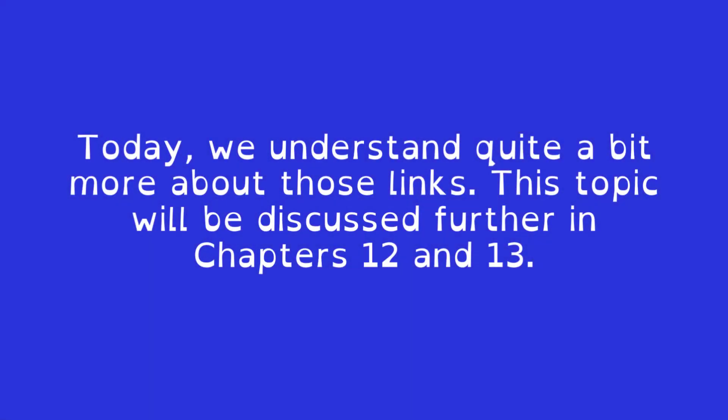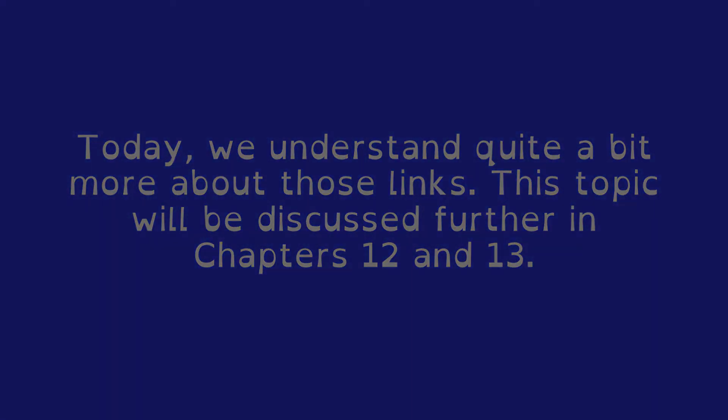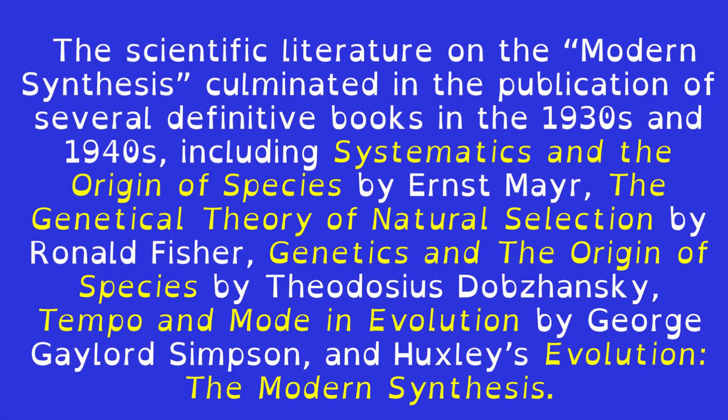This topic will be discussed further in chapters 12 and 13. The scientific literature on the modern synthesis culminated in the publication of several definitive books in the 1930s and 1940s, including Systematics and the Origin of Species by Ernst Mayr, The Genetical Theory of Natural Selection by Ronald Fisher, Genetics and the Origin of Species by Theodosius Dobzhansky, Tempo and Mode in Evolution by George Gaylord Simpson, and Huxley's Evolution: The Modern Synthesis.